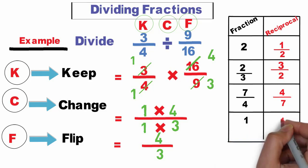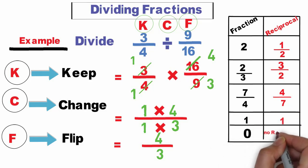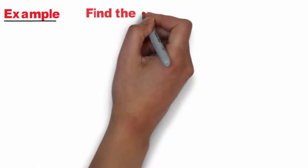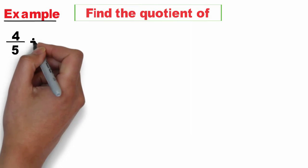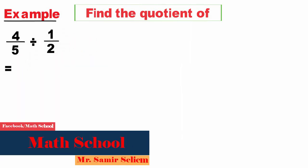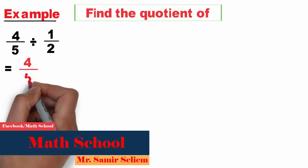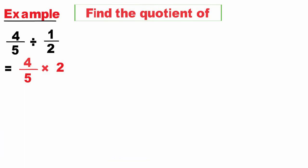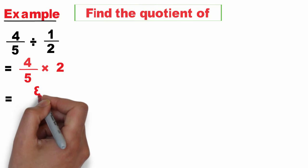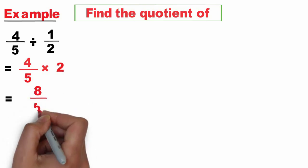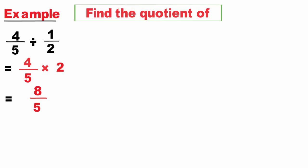Don't forget: the reciprocal of 1 is the same, and zero has no reciprocal. Example: find the quotient of 4 over 5 divided by 1 over 2. Keep the first fraction as 4 over 5, multiply by the reciprocal of the second, which is 2 over 1. No common factors — just multiply the two numerators over the two denominators: 4 times 2 equals 8, 5 times 1 equals 5.